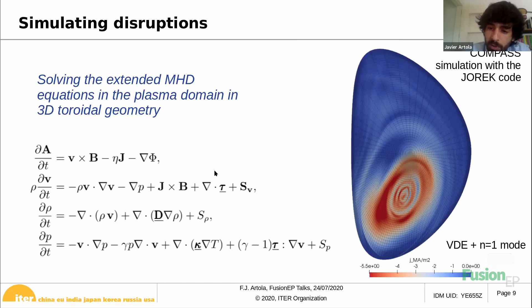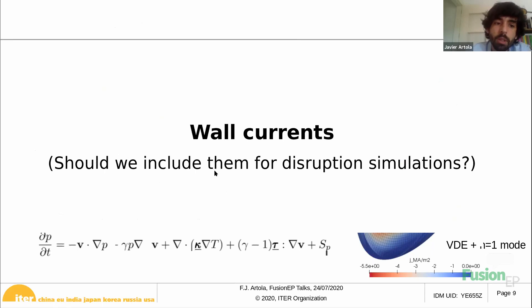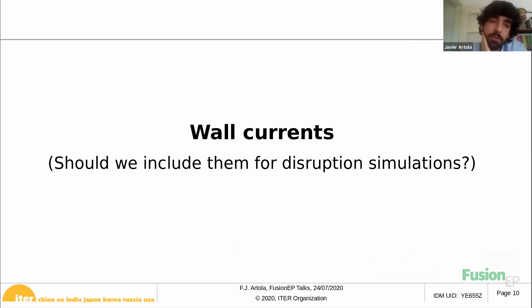We solve these equations and can learn many things about disruptions. My talk is about wall currents. Whenever you have a disruption, the plasma moves and that induces currents in your vacuum vessel — in your walls. The question is whether we should include them for disruption simulations. Are they important? And of course, the answer is that they are very important.